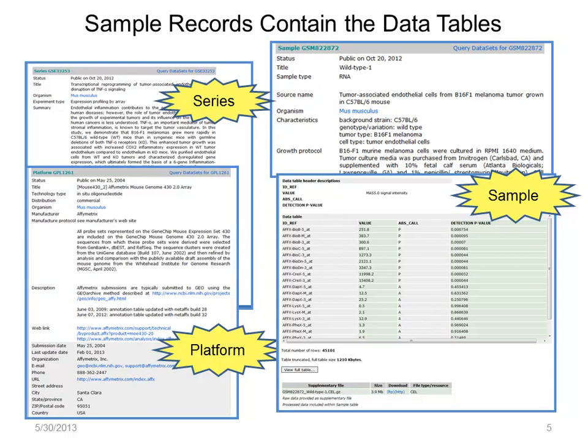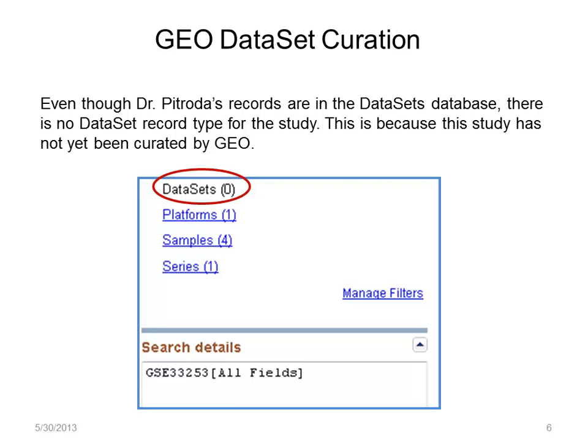I'm going to take a slight detour to explain a situation you might run into. This is a view of the filter section on the right side of our search results page. We know that the data can be found in the Datasets database, yet there is no dataset record. This is because the study has not yet been curated.